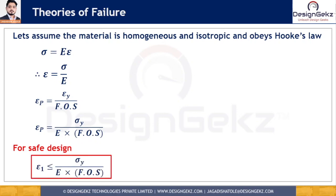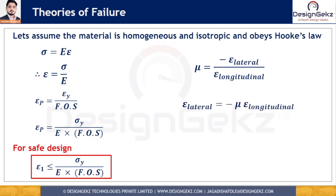We have one more relation in terms of Poisson's ratio mu, which gives the linear relationship between lateral strain and longitudinal strain as mu equals lateral strain divided by longitudinal strain. From this, lateral strain can be written as: lateral strain equals mu times longitudinal strain.